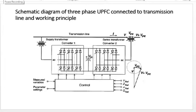Converter one supplies or absorbs the real power demanded by converter two at the common DC link to support the real power exchange resulting from the series voltage injection. This DC link power demand of voltage source converter two is converted back to AC by converter one and coupled to the transmission line bus through the shunt-connected transformer.